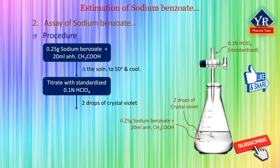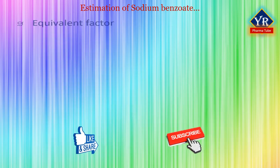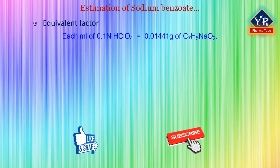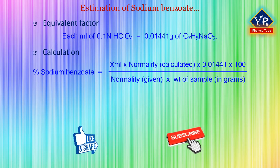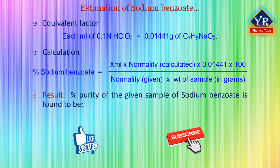After titration, the solution changes its color from blue to bluish green. Carry out a blank determination by repeating the titration as directed above but without the presence of the sodium benzoate sample. The equivalent factor is: each ml of 0.1 normal perchloric acid is equivalent to 0.01441 grams of sodium benzoate. Percentage sodium benzoate is calculated by the formula: (x ml × normality calculated × 0.01441 × 100) divided by (normality given × weight of sample in grams), where x ml is the volume of perchloric acid consumed at the end point, normality calculated is the normality after standardization, and normality given is the theoretical 0.1 normal. Results are expressed as the percentage purity of sodium benzoate in the sample.